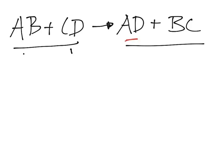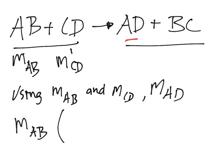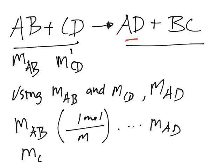We're going to use AD as our product. You'll be given the mass of AB and the mass of CD. What you want to do first is to find, using the mass of AB, the mass of AD — going through the process: mass, then moles. You'll do the same with the mass of CD, the same process until you get the mass of AD. These two numbers will be different, which is necessary. You're going to pick the lowest of these two.